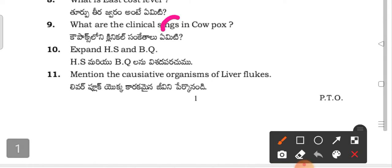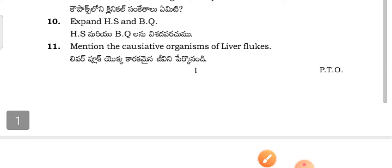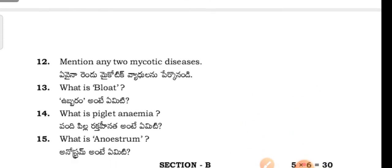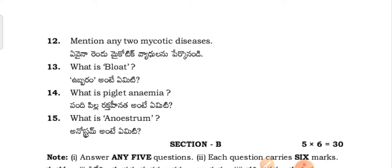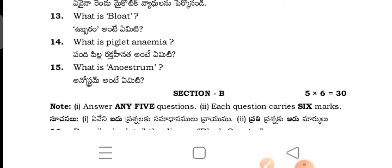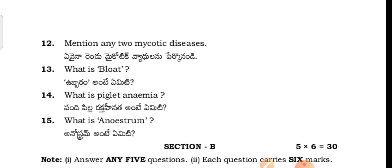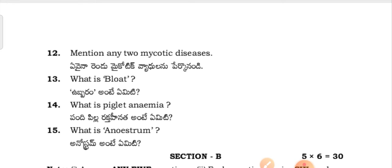Note: there may be a spelling mistake - 'signs' is spelled S-I-G-N-S. Expand HS and BQ. Mention the causative organisms of liver flukes. Mention any two mycotic diseases. What is blood anaemia? What is piclet anaemia? What is anostrum? So that is Section A completed.